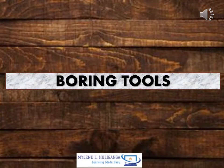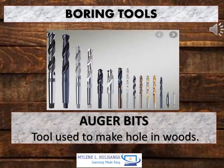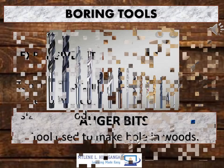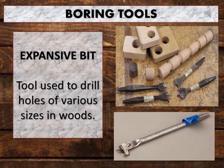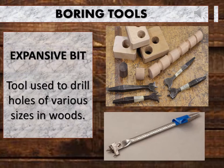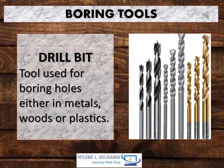Next are the boring tools. Auger bits: tools used to make holes in wood. Expansive bit: a tool used to drill holes of various sizes in wood. Drill bits: tools used for boring holes in metals, wood, or plastics.